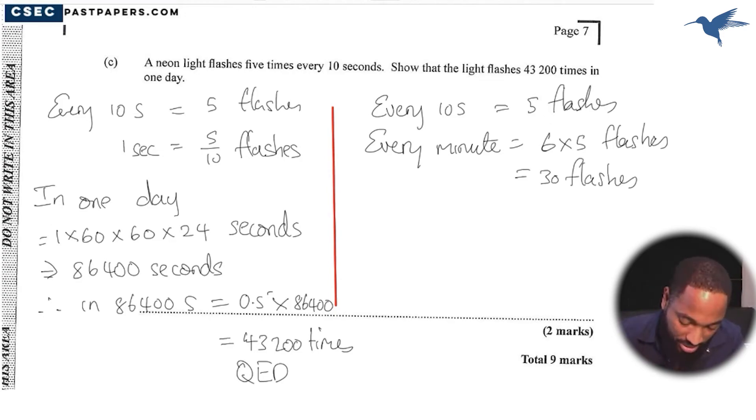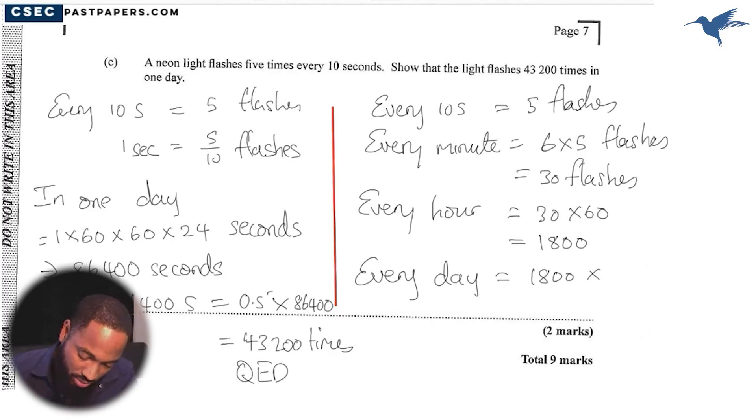Well, you could continue just multiplying this by 60 and by 24 to end up. So I could say every hour we expect 30 times 60 again, which is 1,800. And then every day we expect the 1,800 multiplied by 24 hours, which should give me 43,200 flashes.